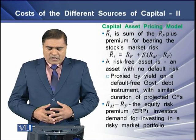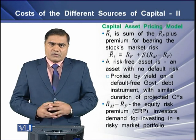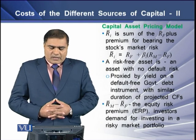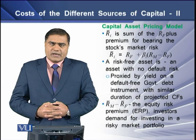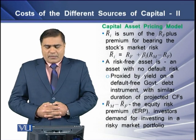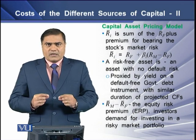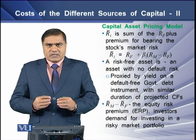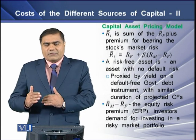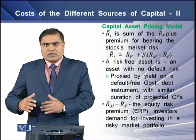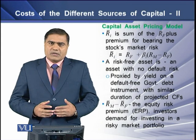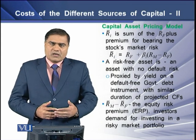In the CAPM model, the first term is the required rate of return, R-bar. On the right-hand side, the first term is RF, the risk-free rate. Then we have beta, which is the variable that measures the responsiveness of a particular stock with reference to variation in the prices of the stock market. Then we have RM, which is the return on the market portfolio, or market return.